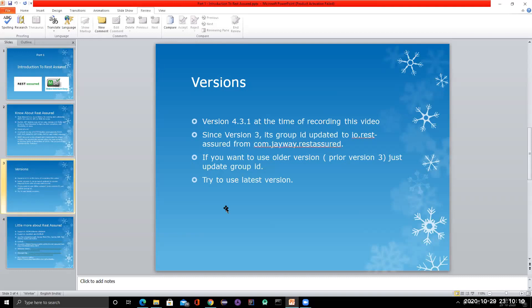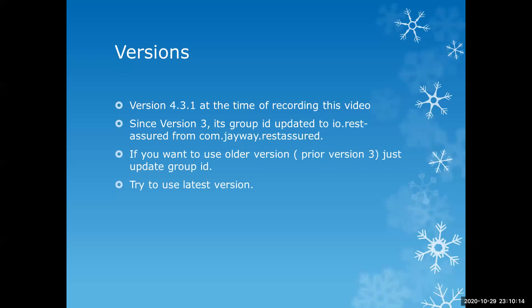At the time of recording this video, the latest version is 4.3.1. I always recommend using the latest version and keeping it upgraded, because if you don't upgrade regularly, a large migration will become difficult later. Since version 3, the group ID was updated to io.restassured from com.jway.restassured.